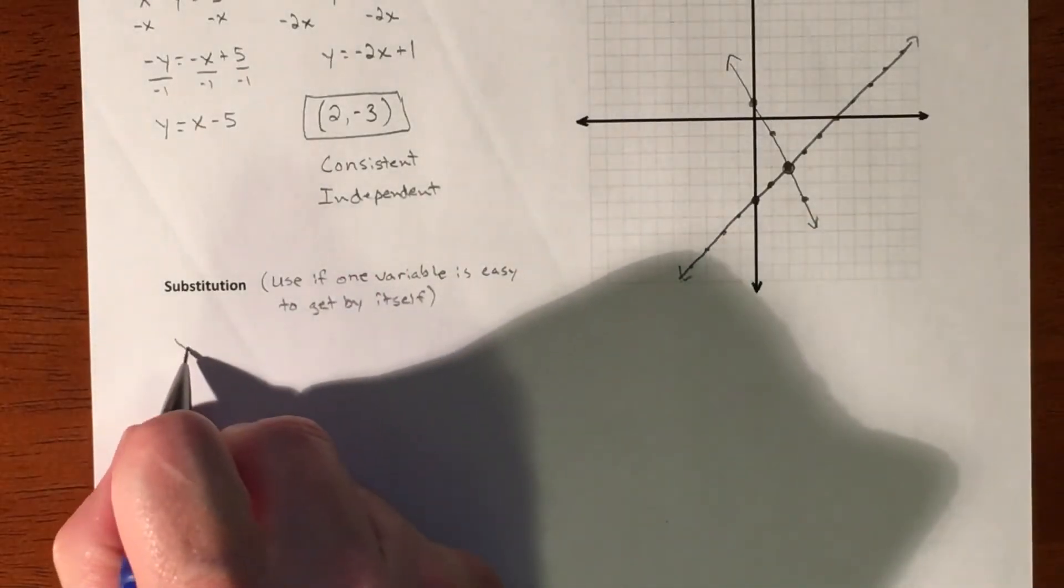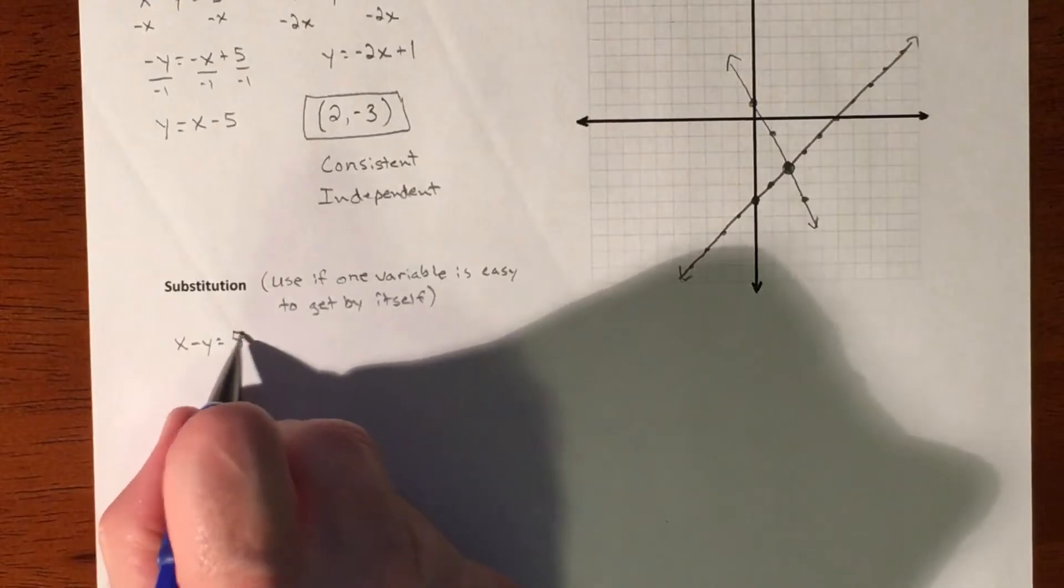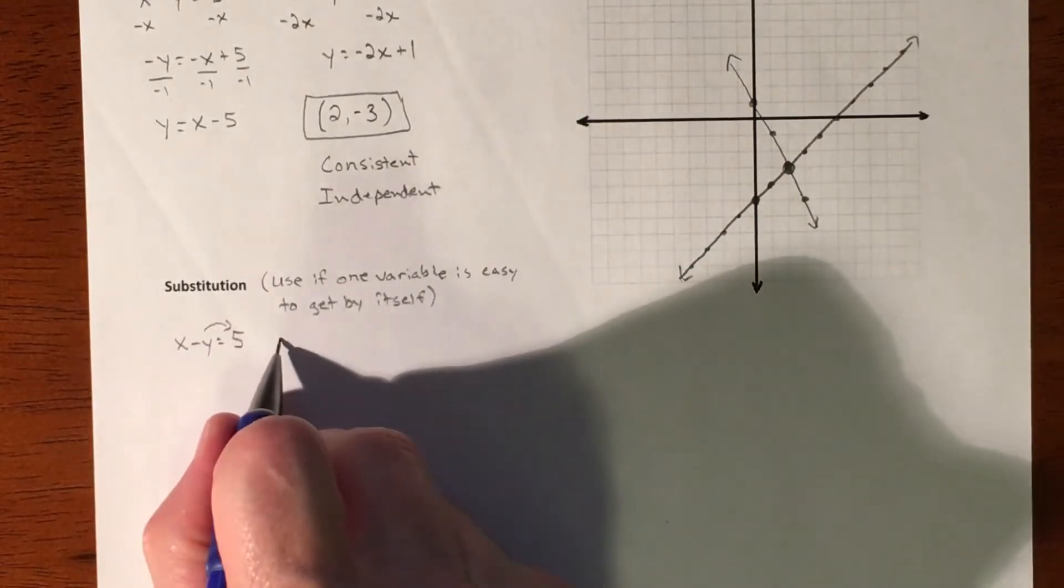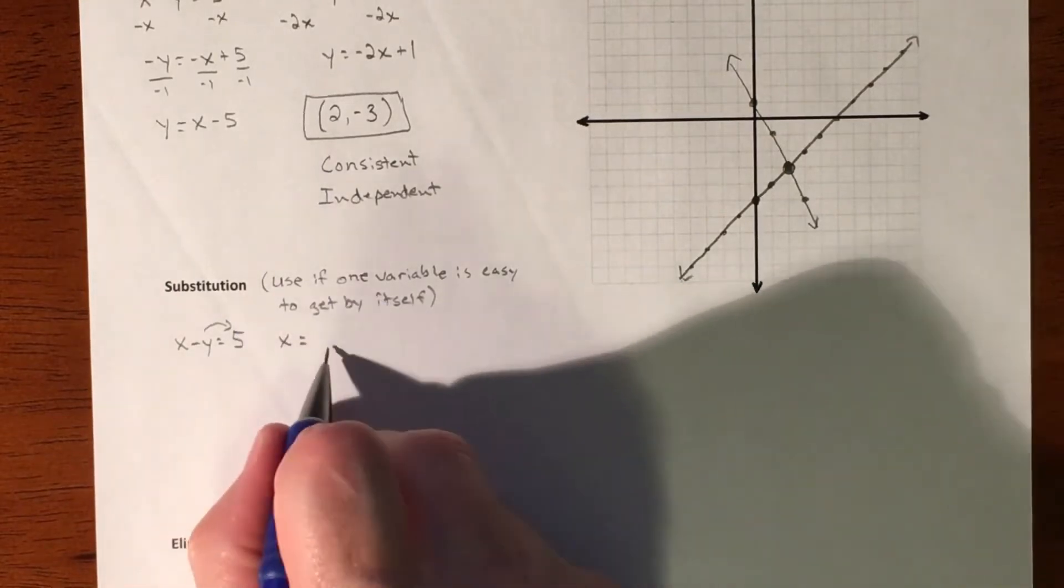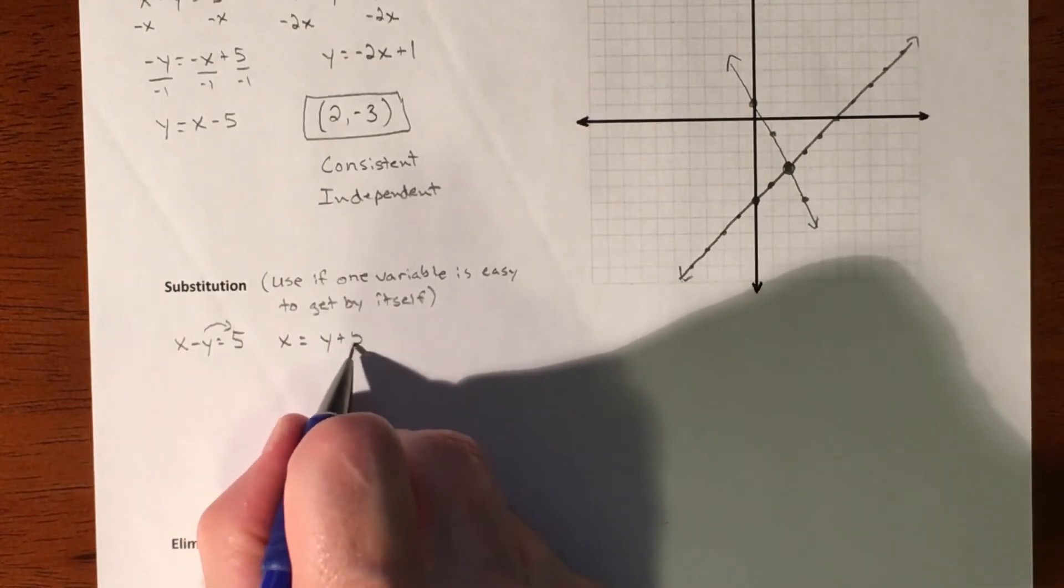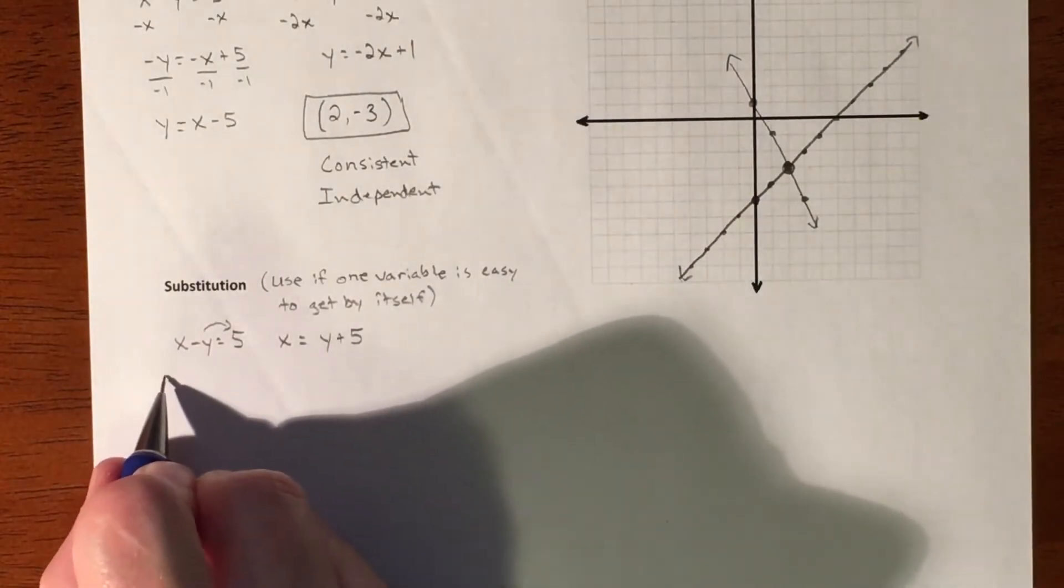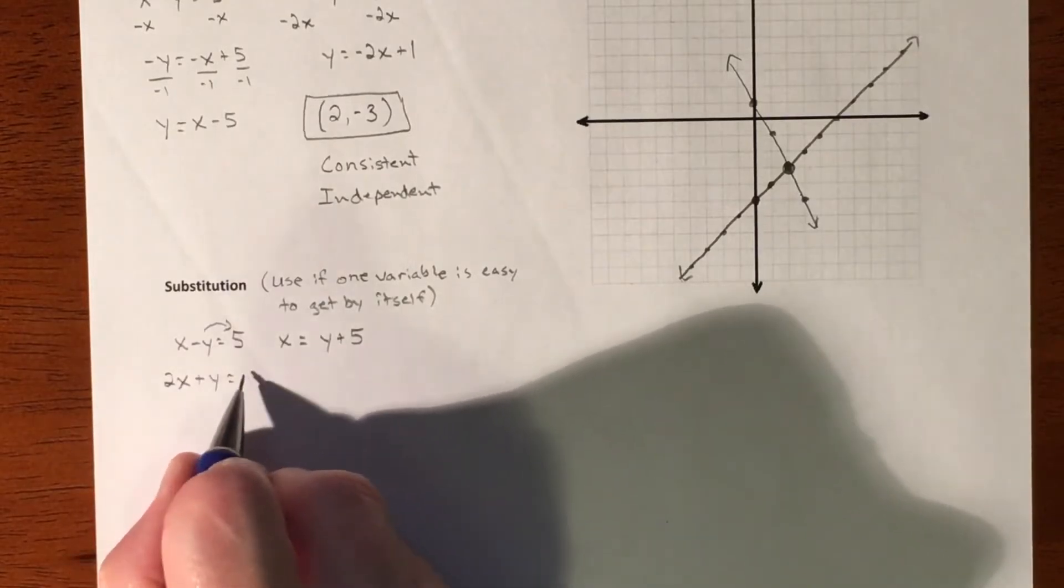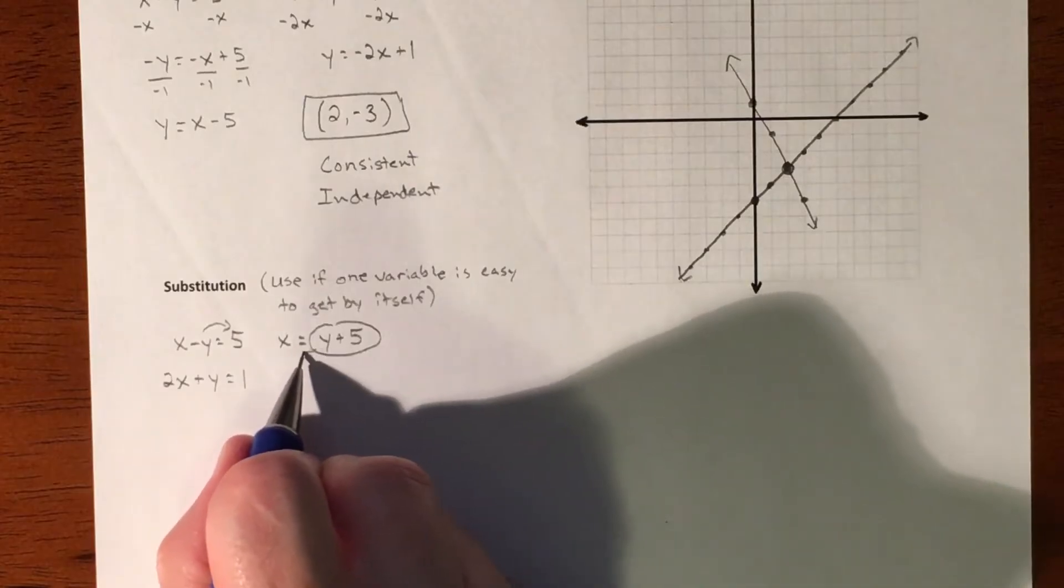So we're going to take x minus y equals 5. We're going to shift the y over. So that becomes x is going to equal y plus 5. Alright. So what we do is here's our second equation. We know what x equals.